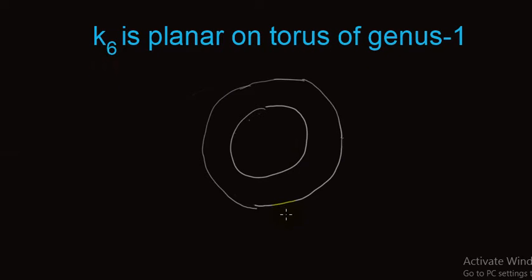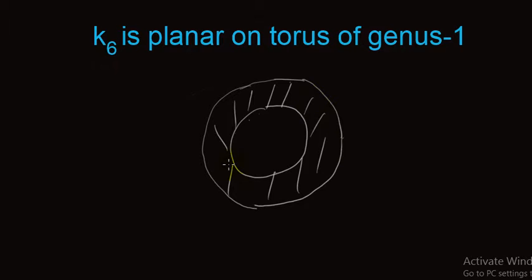So K6 is planar on torus of genus 1. What is torus of genus 1? Torus of genus 1 is a surface of a donut. If we consider the surface of this donut shape, or the surface of a tie tube, it is an example of torus of genus 1.